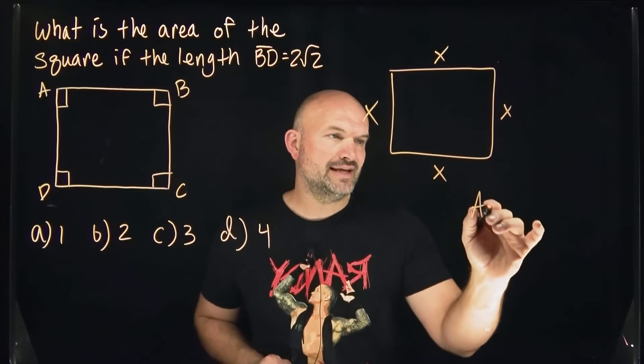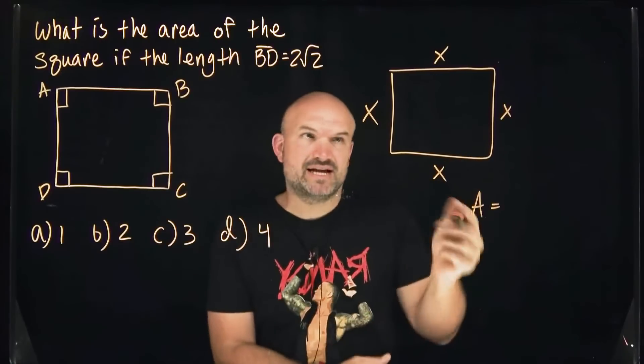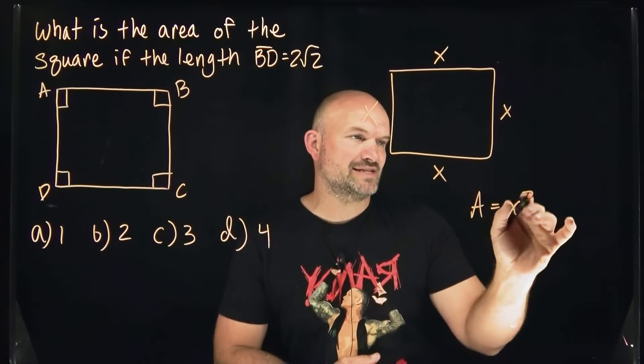So the area is, we know it's going to be base times height, but since they're all the same, we can just say it's going to be x squared.